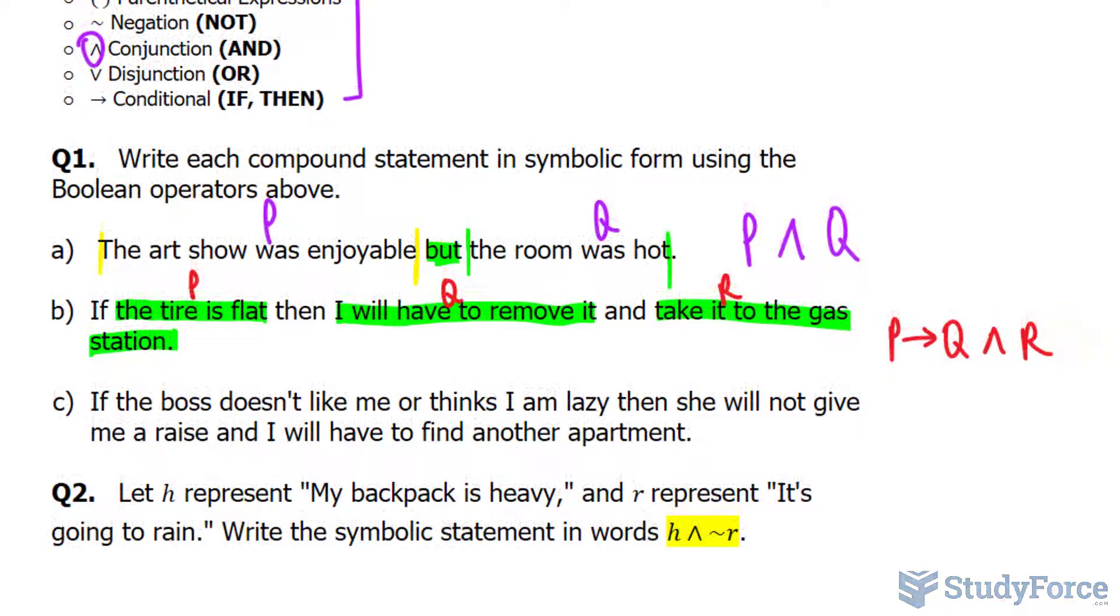Lastly, in part C: if the boss doesn't like me or thinks I'm lazy, then she will not give me a raise and I'll have to find another apartment. Let's highlight all the different parts. So we have a condition here, if and then. In between that, we have two statements.